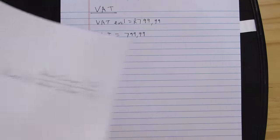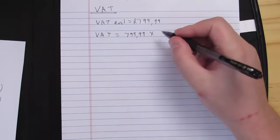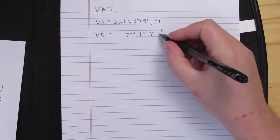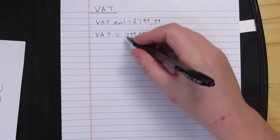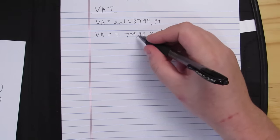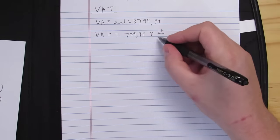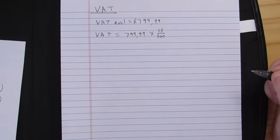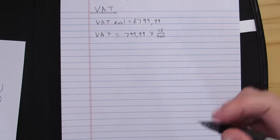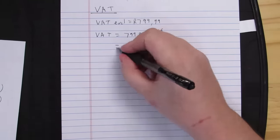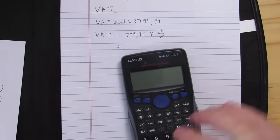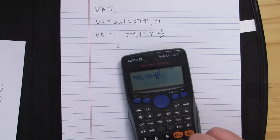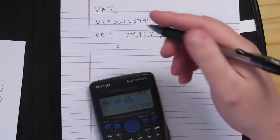We're going to take 799.99 and multiply it by what I want — which is 15 — over what I have, which is VAT exclusive, which is 100. So: 799.99 multiplied by 15 over 100, or 15% itself, gives me 119.9985, which we could actually round to 120 Rand.